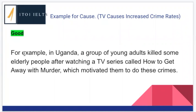So this is our first example: 'For example, in Uganda, a group of young adults killed some elderly people after watching a TV series called How to Get Away with Murder, which motivated them to do these crimes.' Remember, we're trying to support the idea that TV causes or increases crime, so somewhere there has to be a cause in this example. Here we can see that this group of young adults were motivated — they were caused to do this because they watched a TV series. We have a specific TV series, a specific crime, and a specific place. This ticks all the boxes for a good, specific example.